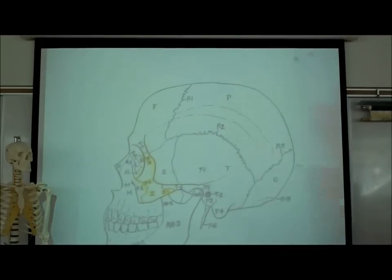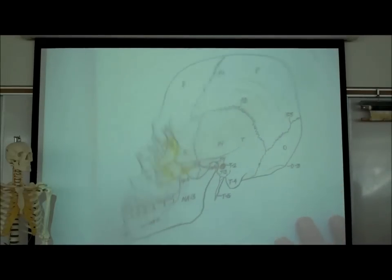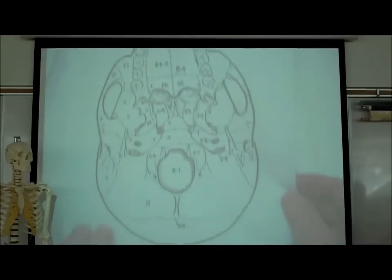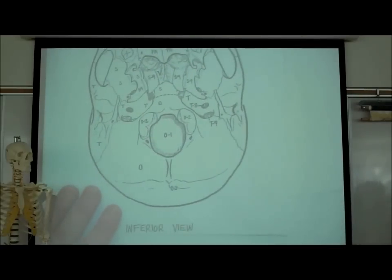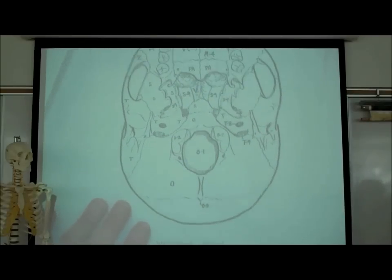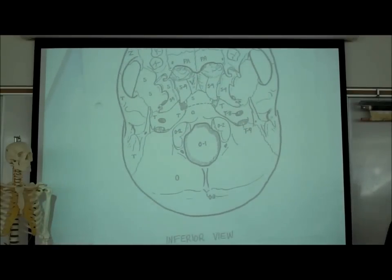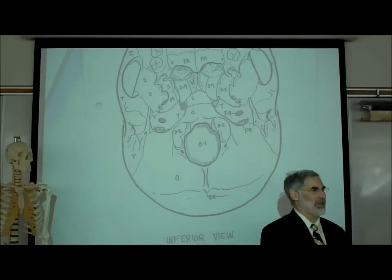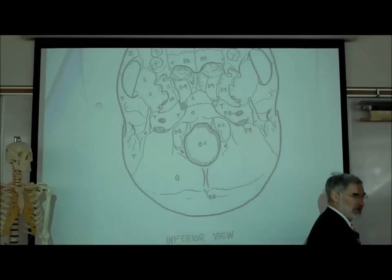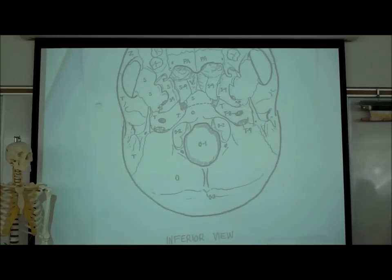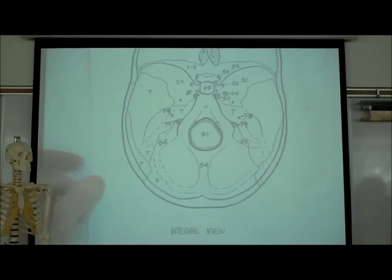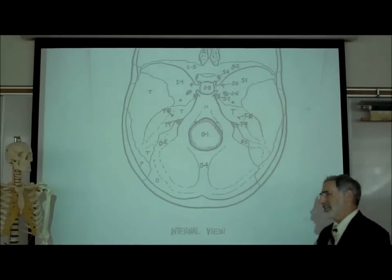On page two, this is the lateral or side view. On page three, this is labeled the inferior view — that's the bottom. So if you have a skull, turn it so you're looking at it from the underside. On page four, it says internal view, meaning the inside.